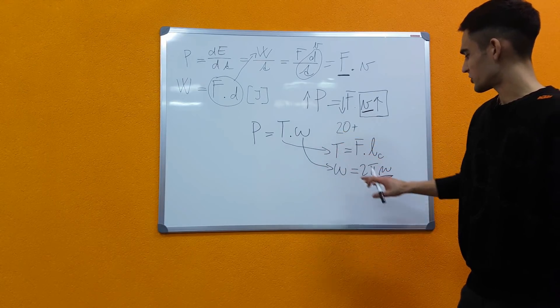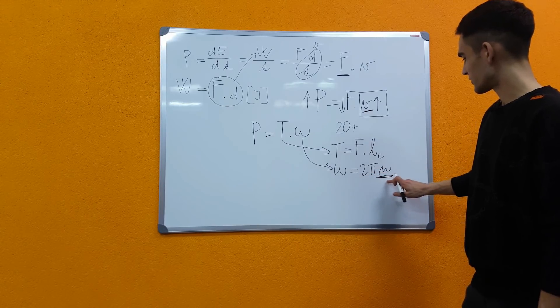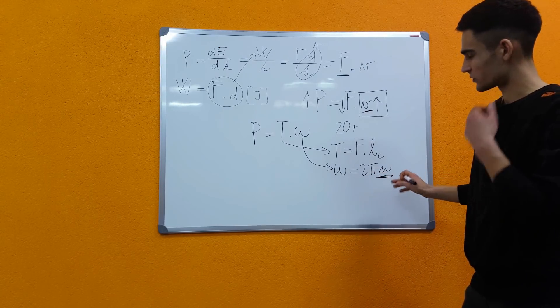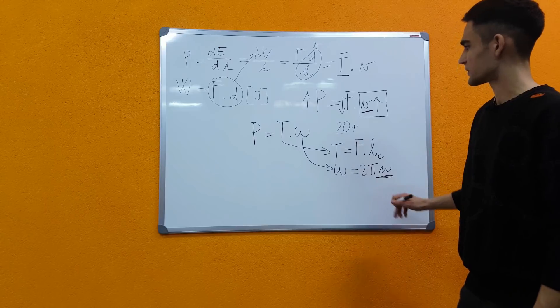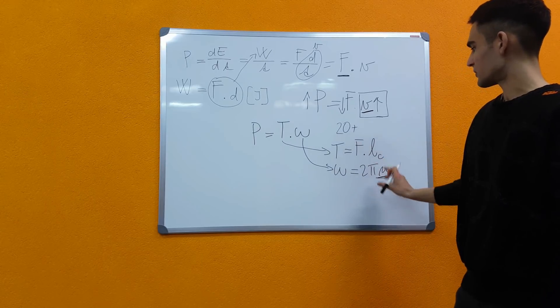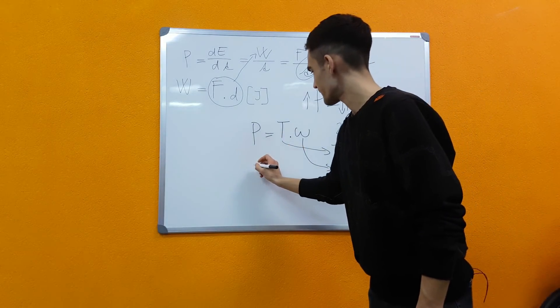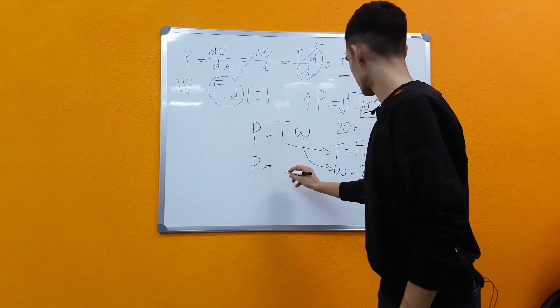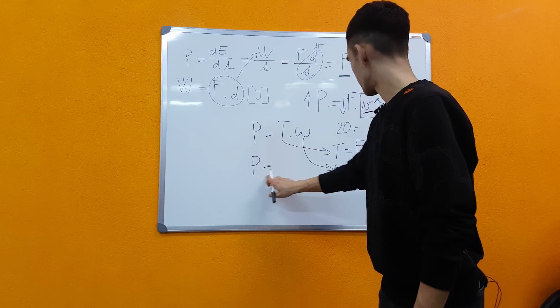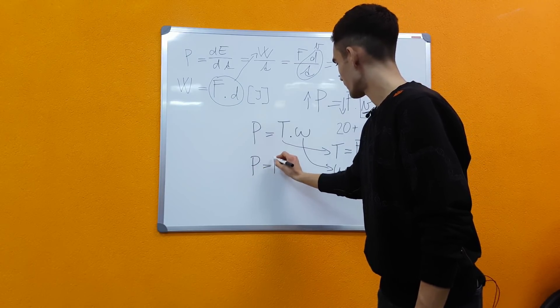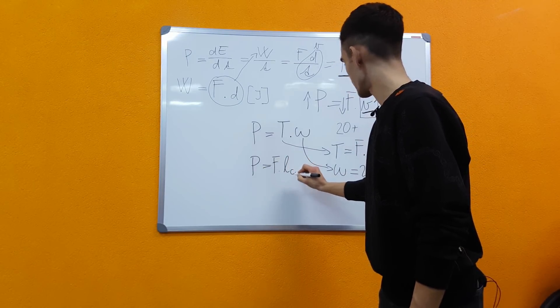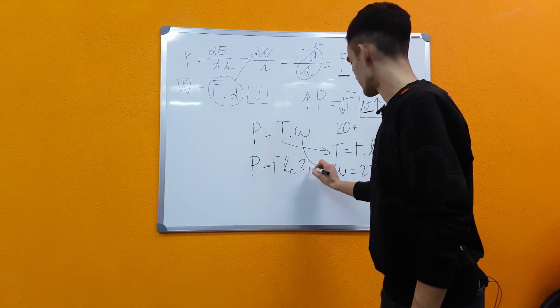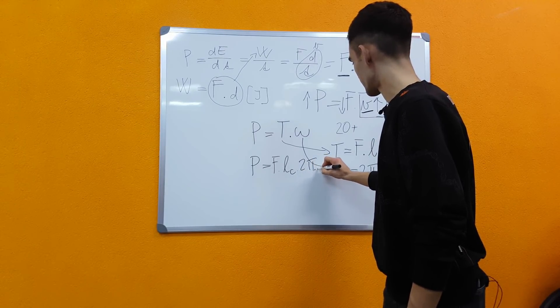But for this calculation we of course need to convert that into revolutions per second. So now if we put this into our equation, we get that power equals force times lever times 2π times the cadence.